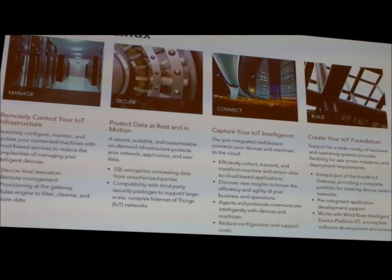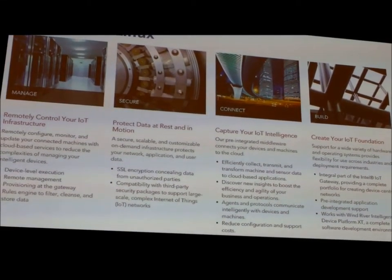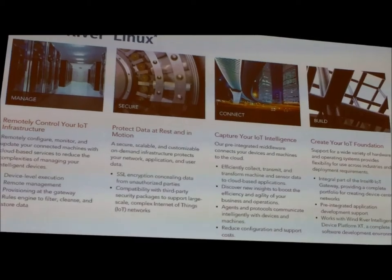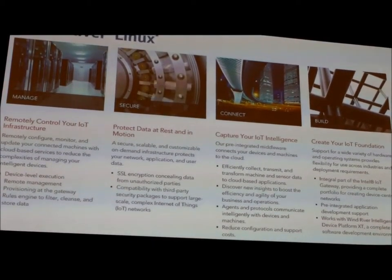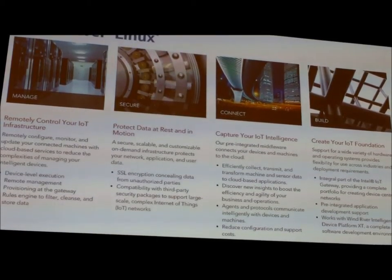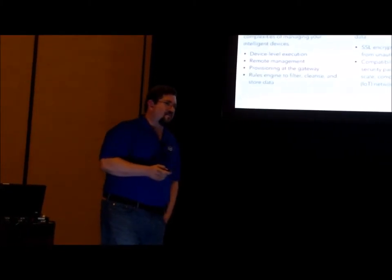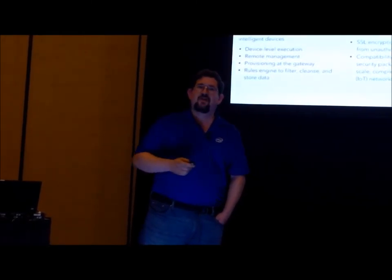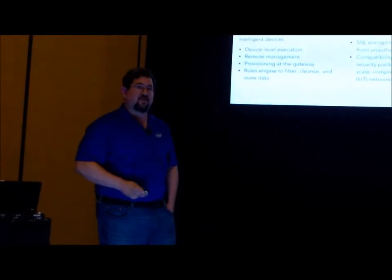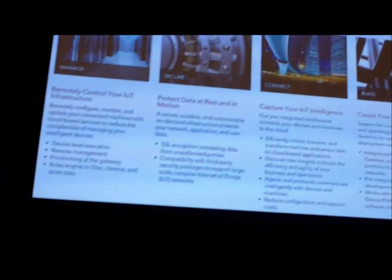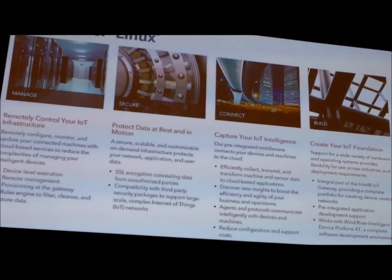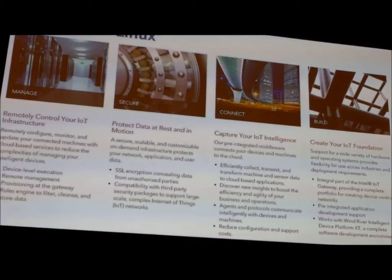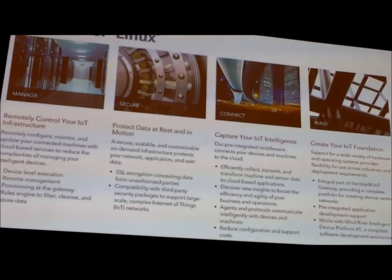The core of the gateway is the operating system: the Intel IoT gateway runs Wind River Linux, which is a hardened version of Linux providing a number of very nice features including whitelisting of processes allowed to run. When I was deploying this, the first thing I did was start a database — and the first thing the OS told me was that my database had not been given permission to allocate memory. It terminated the database, I went and whitelisted it, and then it worked fine.